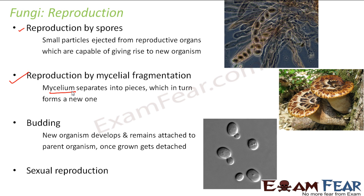In budding, a new organism develops and remains attached to the parent organism. Once completely grown, it gets detached. This is very similar to budding observed in Hydra. Yeast is a very good example of budding. A small new outgrowth develops on the yeast cell — this is the new organism. It remains attached to the parent, grows, becomes mature, and then separates out.